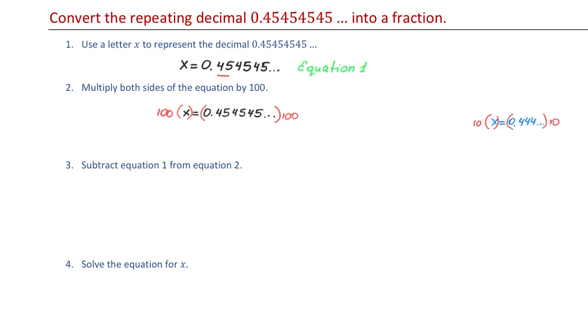And if we would have a decimal with three repeating digits, for example, X equals 0.275275 and so on, then we would multiply both sides by 1,000. So the number of zeros is the same as the number of the repeating decimals.